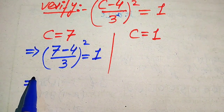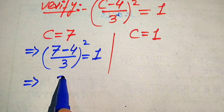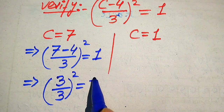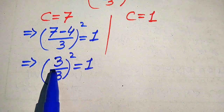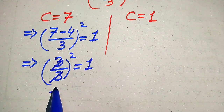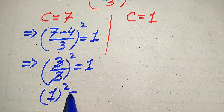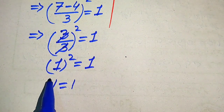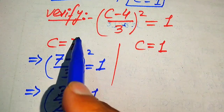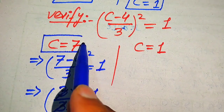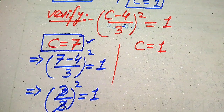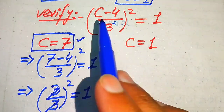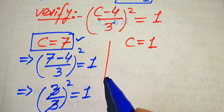When we put C equals 7 into the left hand side, it becomes (7 minus 4) divided by 3, whole squared, equals 1. Now 7 minus 4 equals 3, so we get (3 divided by 3) squared equals 1. The 3 cancels, leaving 1 squared equals 1, which gives 1 equals 1. This shows that C equals 7 satisfies the given equation and is the first solution.